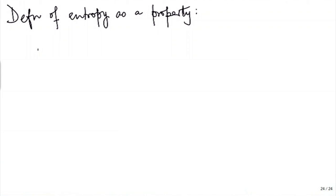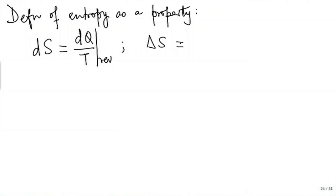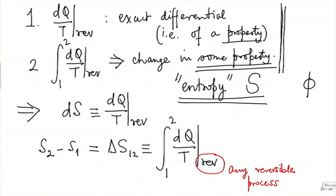Now, see what we have done. We have defined a property; the symbol is that entropy is defined either as a differential or as a change. Now the question is how do we execute this. Let us look at the execution later, but before that let us complete our scheme.